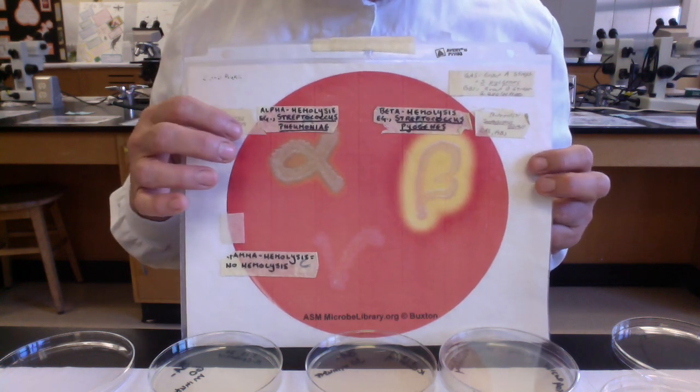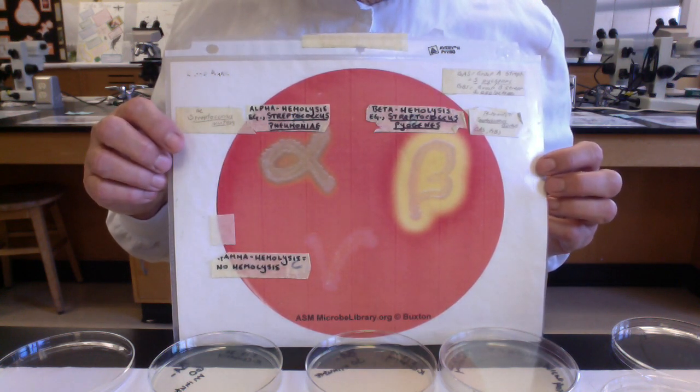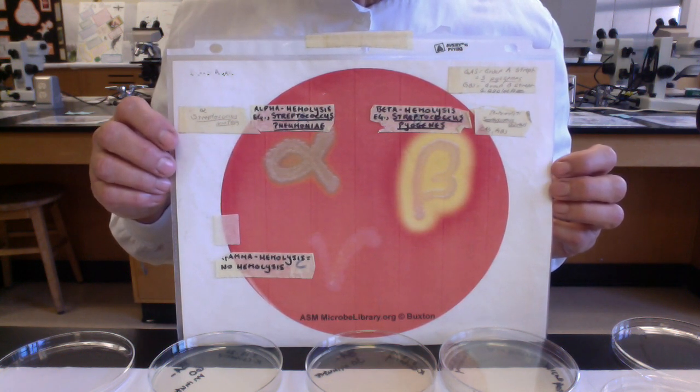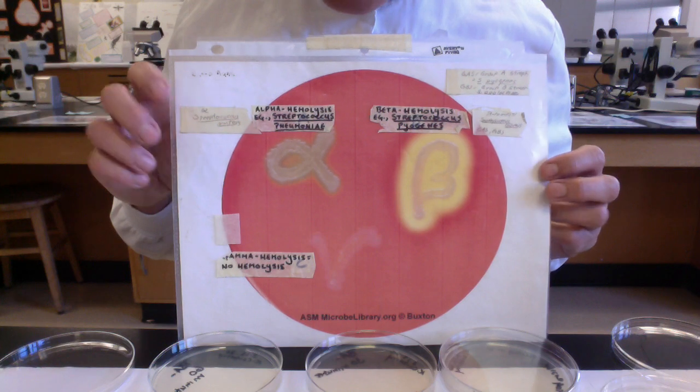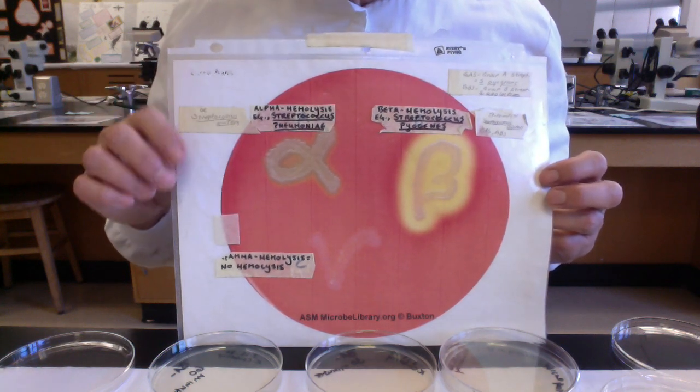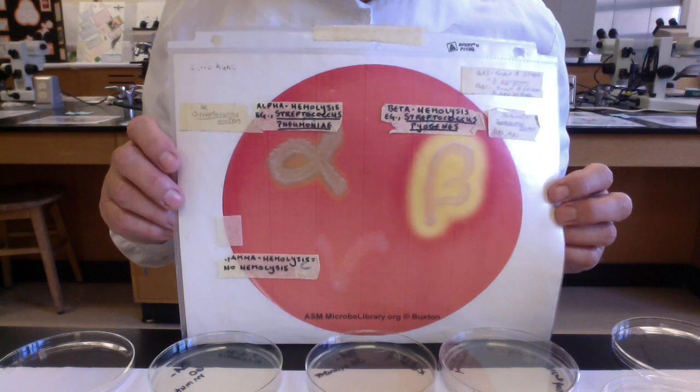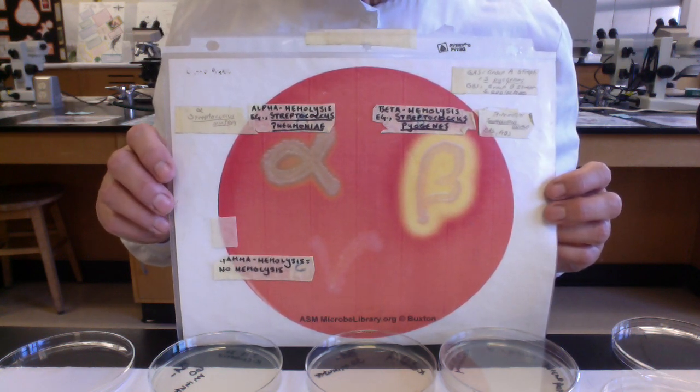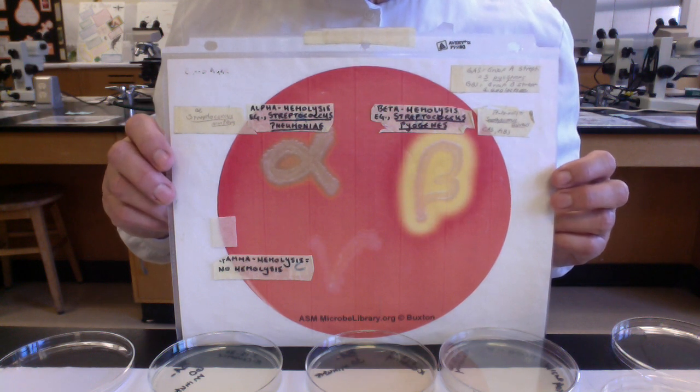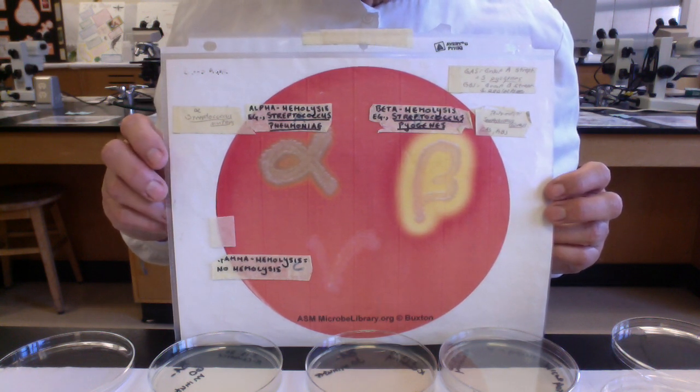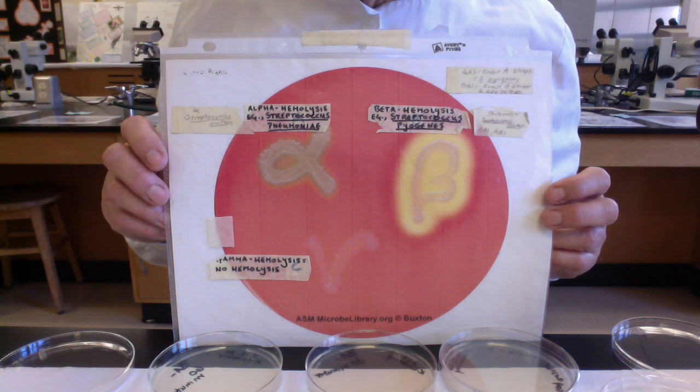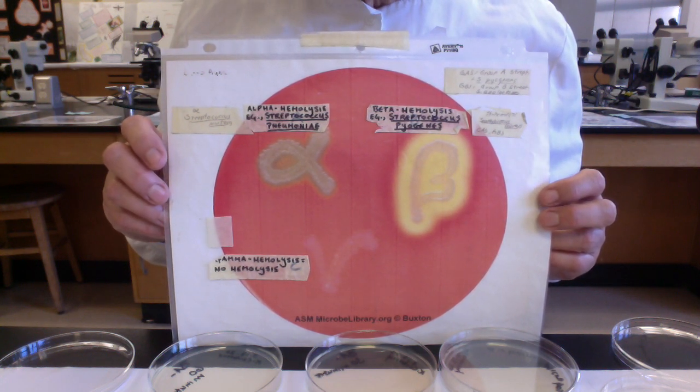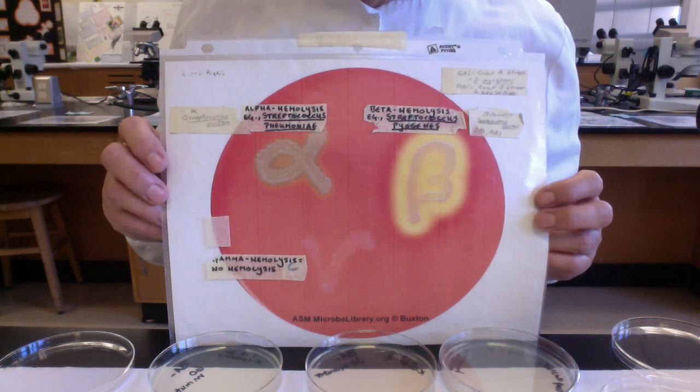The reason that the type of hemolysis can be helpful is it lets us differentiate between potential pathogens. So as an example, folks, if we start out with alpha hemolysis, we'll just name some gram-positive bacterial pathogens that are alpha hemolytic. So one of them would be Streptococcus mutans, which lives in our mouth. They form biofilms on our teeth. And so what we'll do is part of our experiment...